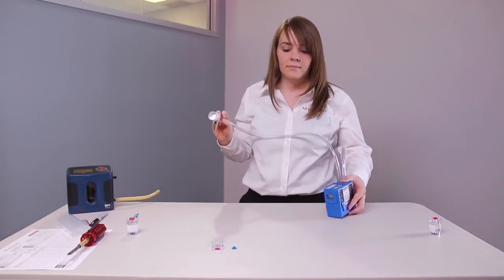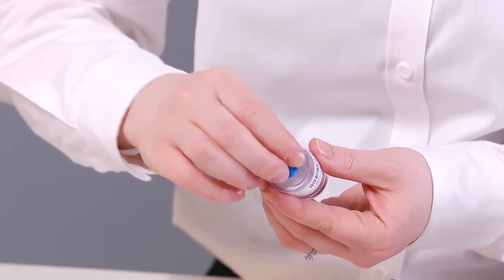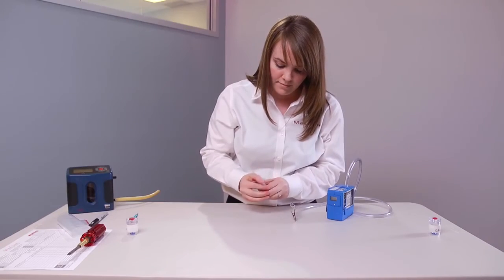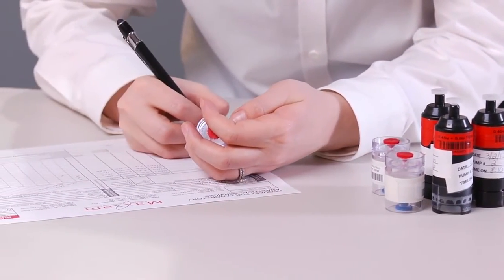Once sampling is complete, reassemble the cassette and put the plugs in. Store the samples at ambient temperature until ready to ship. To finish, complete the laboratory request form, also called the chain of custody.